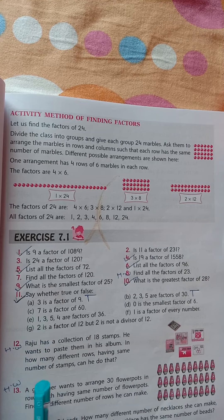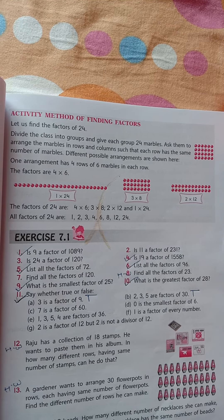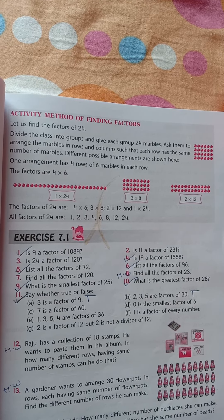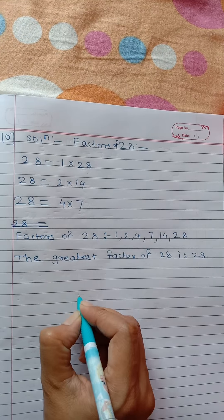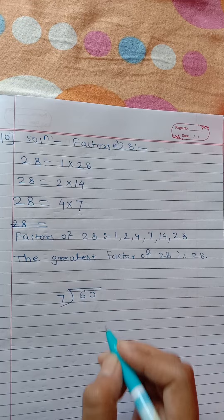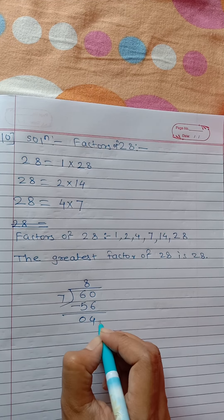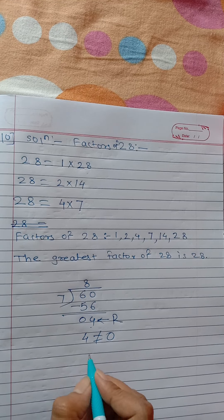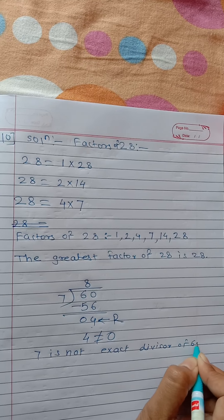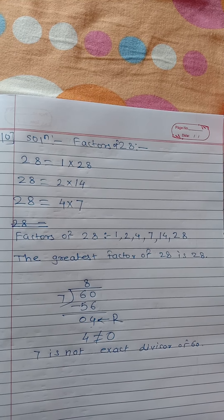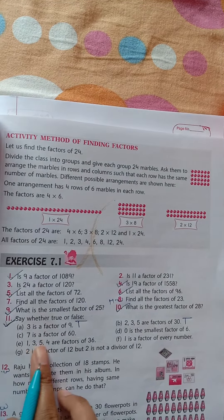Part C: 7 is a factor of 60. This statement is false. Because if we divide 60 by 7, the remainder is not 0 — it is 4. You can cross-verify: 7 eights are 56, and 60 minus 56 is 4. Remainder 4 is not equal to 0, so 7 is not an exact divisor of 60. Therefore 7 is not a factor of 60. The statement is false.